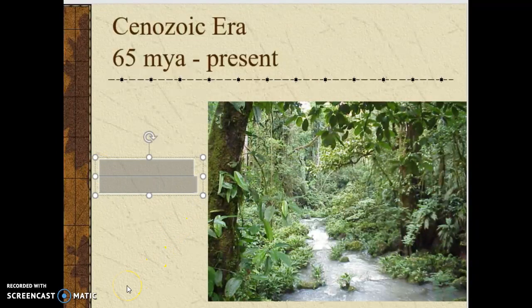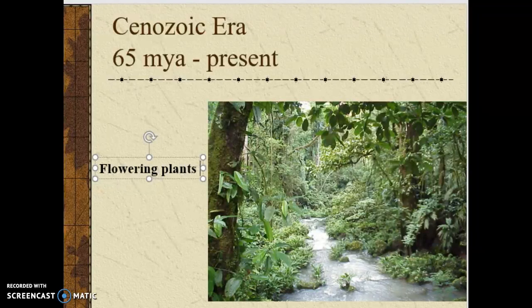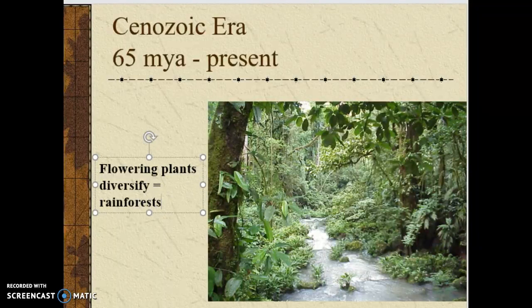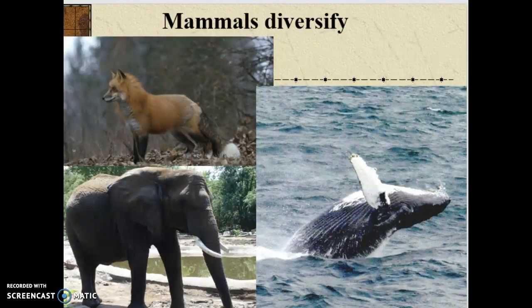During the Cenozoic, flowering plants diversify and do really well, leading to rainforests. Big sections of the Earth are covered in a tropical rainforest-type environment. The mammals that made it through the Cretaceous Calamity then diversify into all the different ecological niches the dinosaurs used to have — big herbivores, mammals in the ocean, mammals in the air, carnivores, omnivores, scavengers. These mammals started to take over basically the jobs that the dinosaurs used to do.